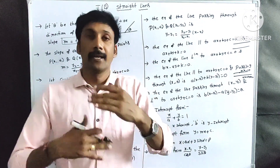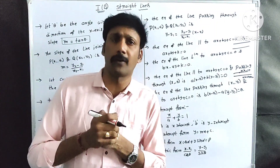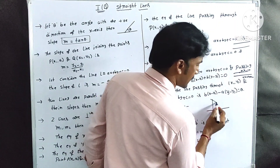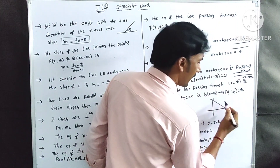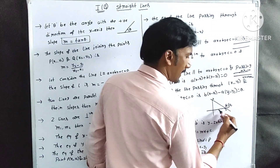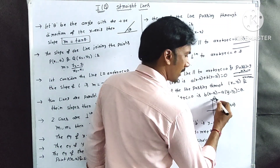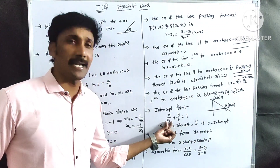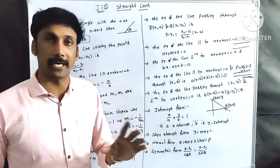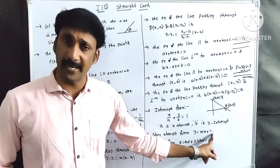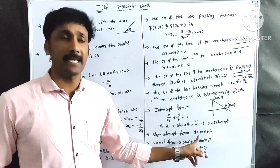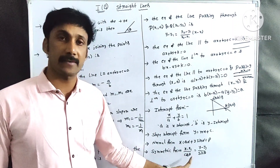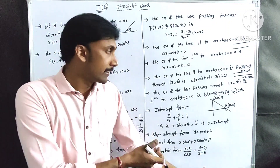The forms of a line equation include: intercept form x by a plus y by b equal to 1, where small a is the x-intercept and small b is the y-intercept. Point A is (a, 0) on the x-axis and point B is (0, b) on the y-axis. Slope-intercept form: y equal to mx plus c. Normal form: x cos alpha plus y sin alpha equal to p, where p is the perpendicular distance. Symmetric form: x minus x1 by cos theta equal to y minus y1 by sin theta.